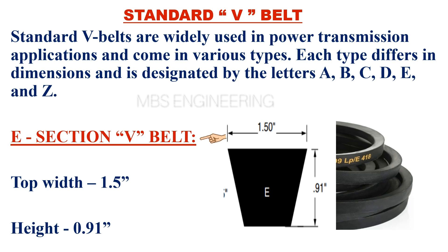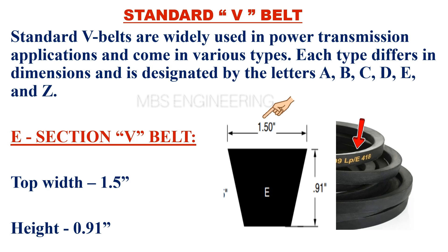We will understand the E-section V-belt. The top width of the E-section V-belt is 1.5 inches. The height of the E-section V-belt is 0.91 inches. Please take a look at the figure that shows section E V-belt.